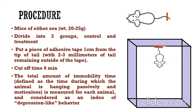Initially, the mice try to struggle and escape from this environment, but after four minutes you can find that the mice will immobilize. The end result is denoted by immobility. The total amount of immobility time should be counted, and it is defined as the time during which the animal is hanging passively and motionless. This is measured for each animal and considered as an index of depression-like behavior.